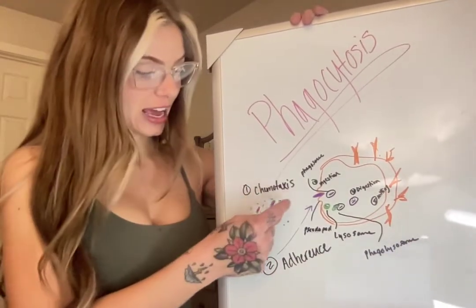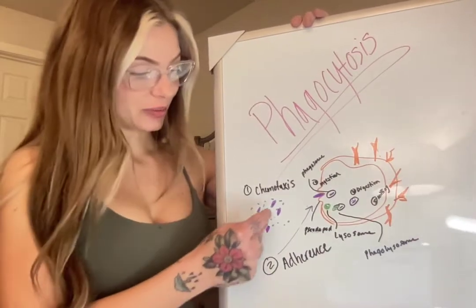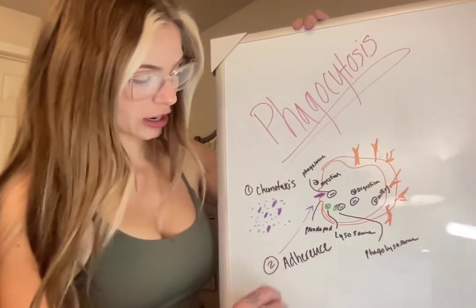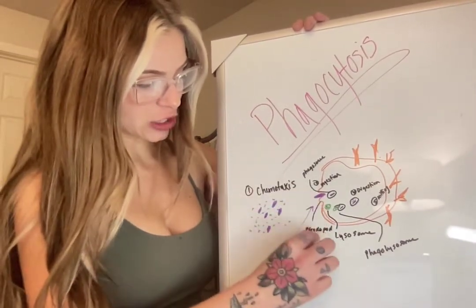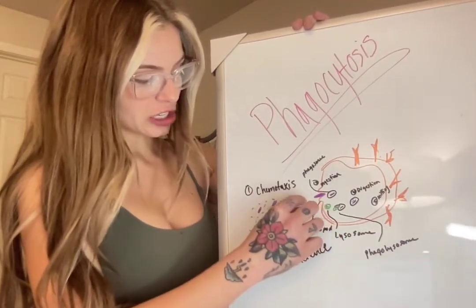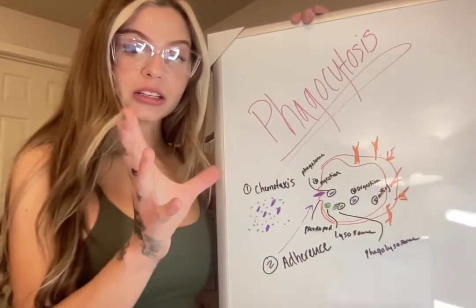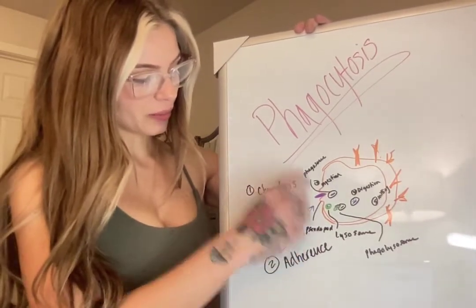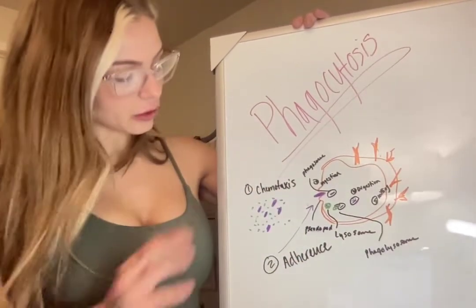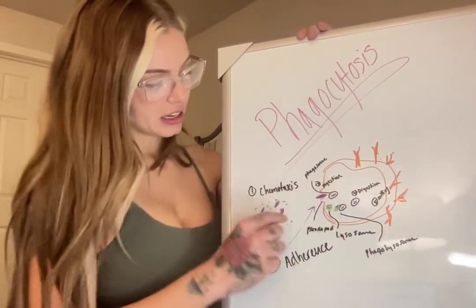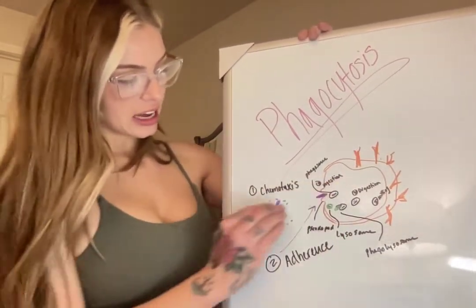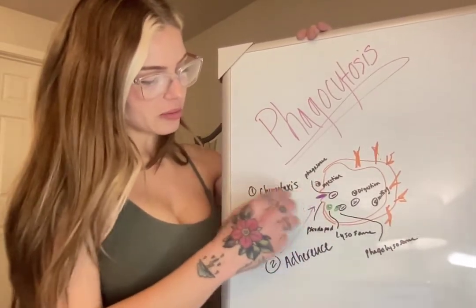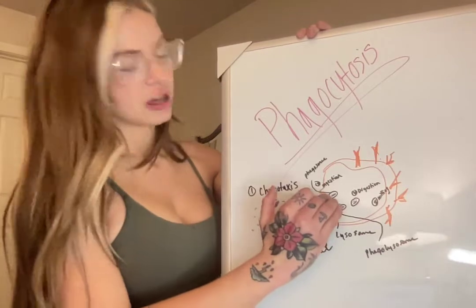So when the phagocyte goes to where the microbe is, it can adhere to the microbe, and that's what you're seeing here. It extends its pseudopods, which is an extension of its cellular membrane, to enclose around the microbe and ingest it into its body.